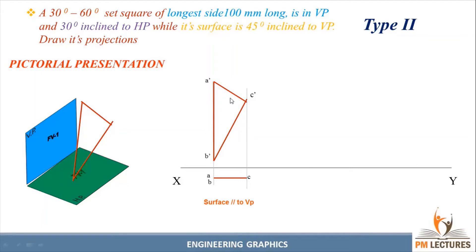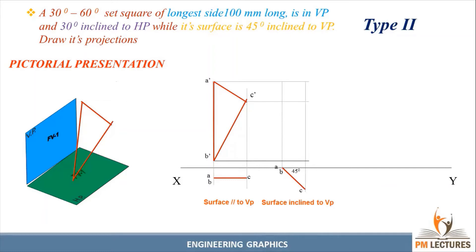After the initial step, we need to incline the surface 45 degrees to VP. This is the second step — surface inclination. We draw 45 degrees with the distance of A to C, and B will be on an invisible line. After that we project from both sides. The naming becomes A dash and A will be A1 dash, B dash and B will be B1 dash, and C dash and C will be C1 dash.